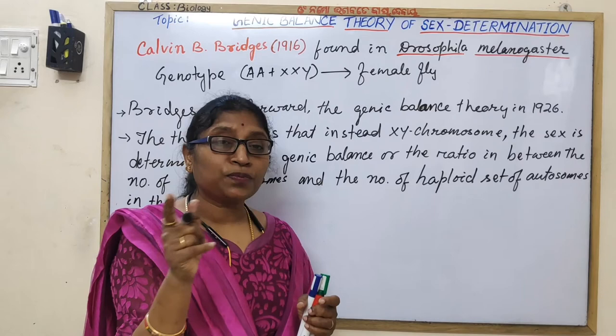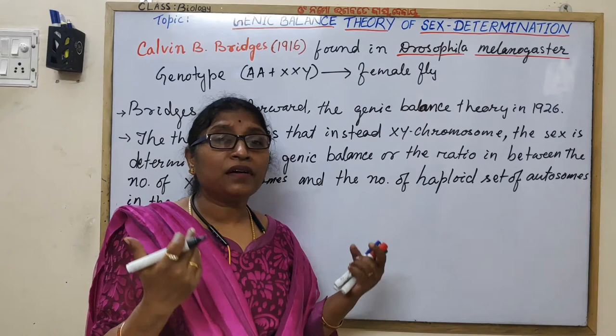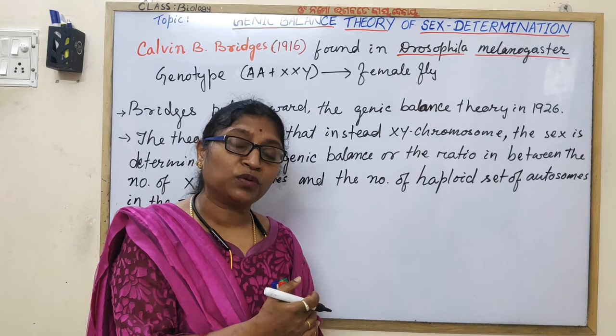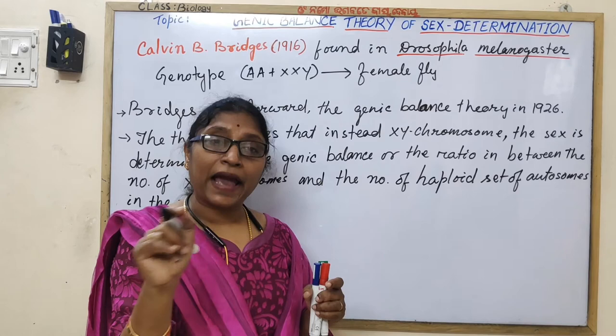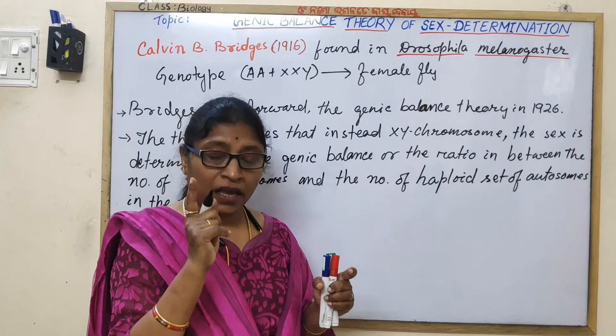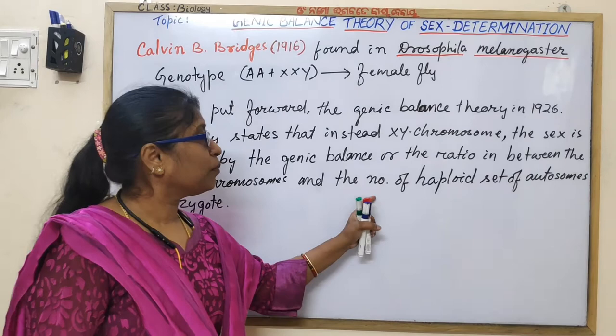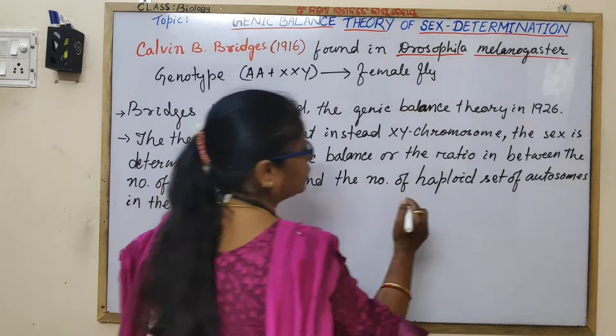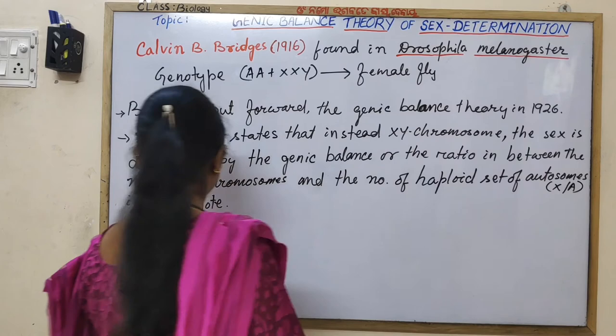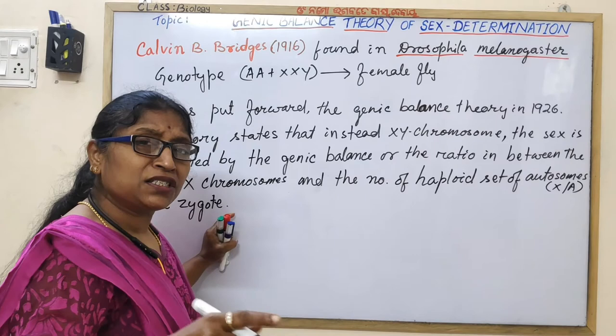The number of haploid sets of autosomes means how many sets of autosomes are present. N stands for haploid set of chromosomes. In human diploid cells, there are 2 haploid sets of autosomes. In a haploid organism there is 1 set, and in a triploid there are 3 sets. This ratio is expressed as X divided by A, written as X/A, and it is established at fertilization.